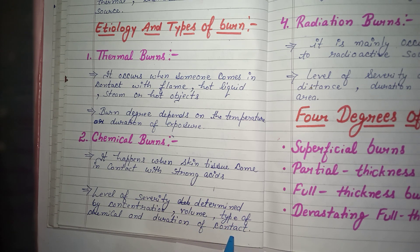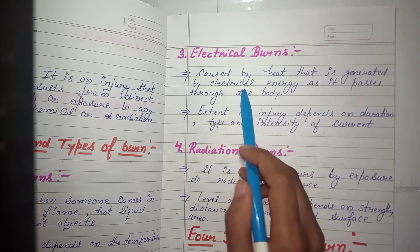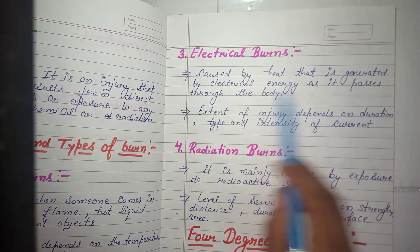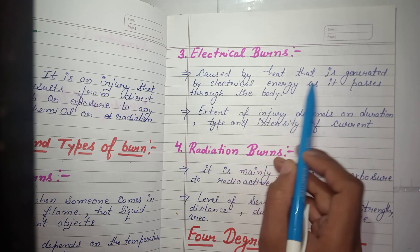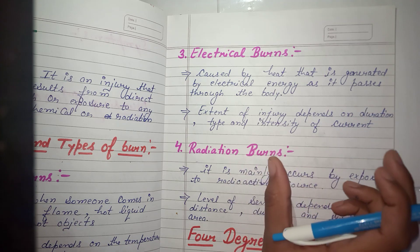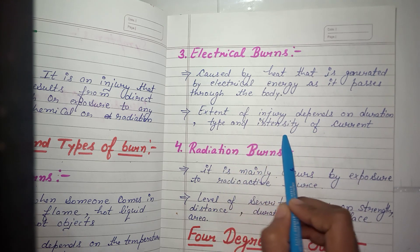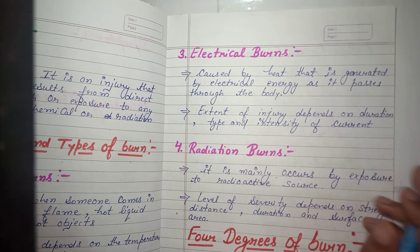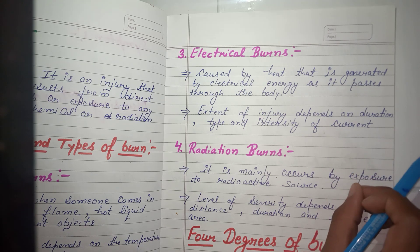Electrical burn is caused by heat generated by electrical energy as it passes through the body. The extent of injury depends on the duration, type, and intensity of the current — meaning how long the contact was maintained and how severe the current was, which determines the degree and severity of the burn.